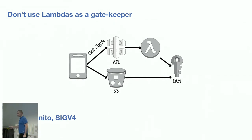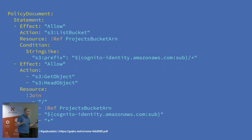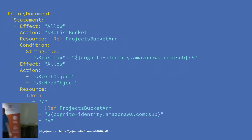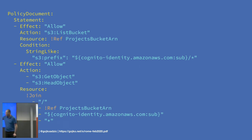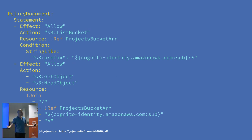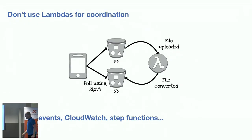With Cognito policies you can include a variable that gets replaced with the actual user ID at runtime. The policy says: on the project bucket, allow Cognito-authenticated users to get objects, but only if the prefix matches their user ID — so I can get my files but not yours. After setting this up, clients can talk directly to storage without Lambda as a gatekeeper in between.